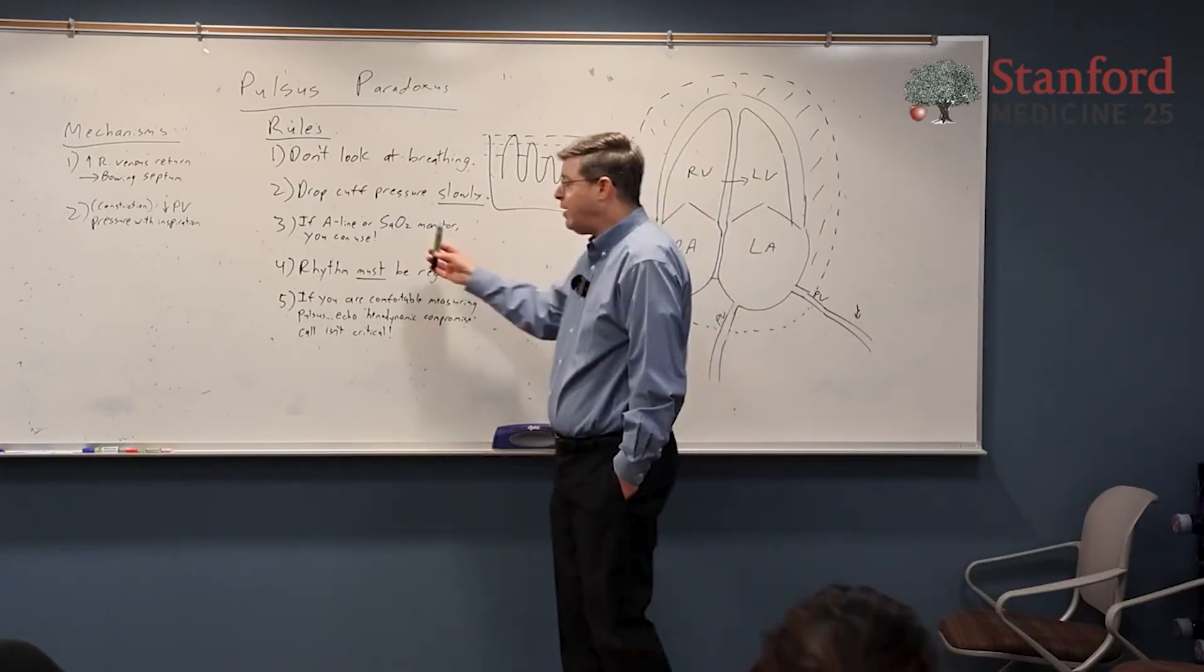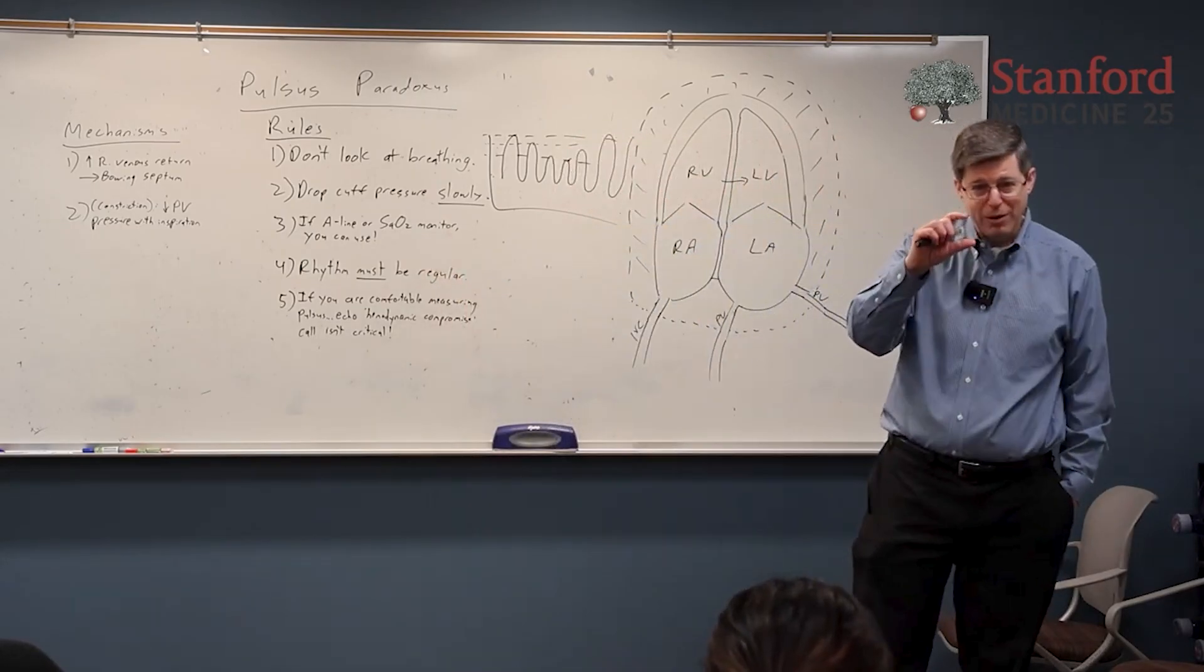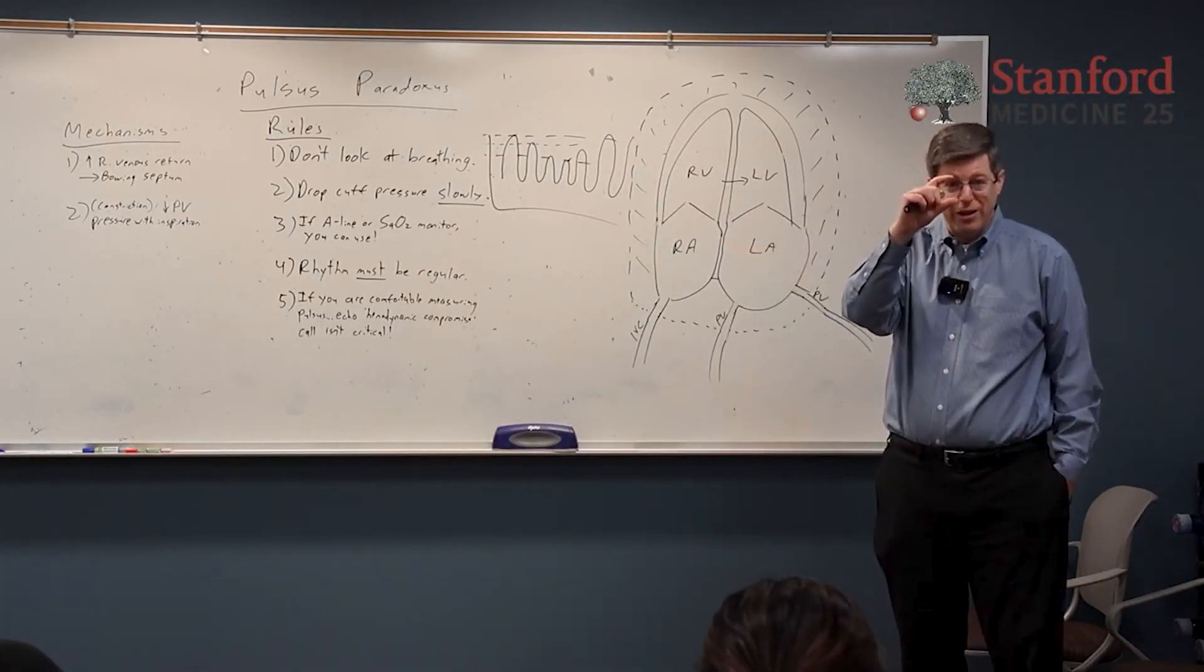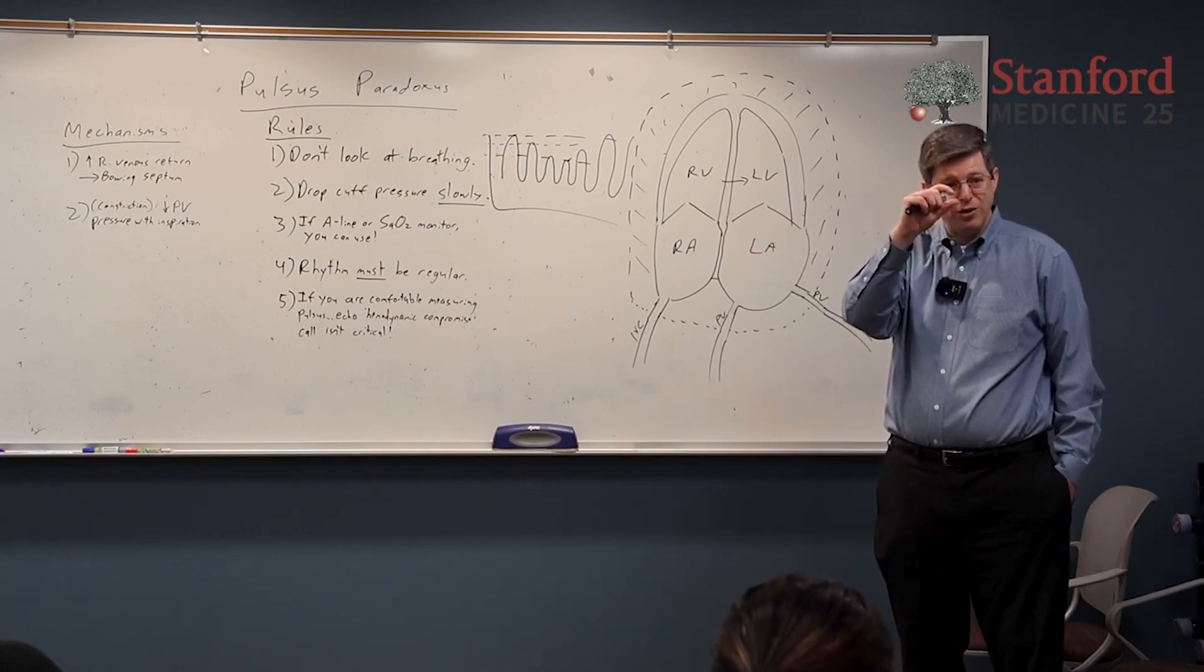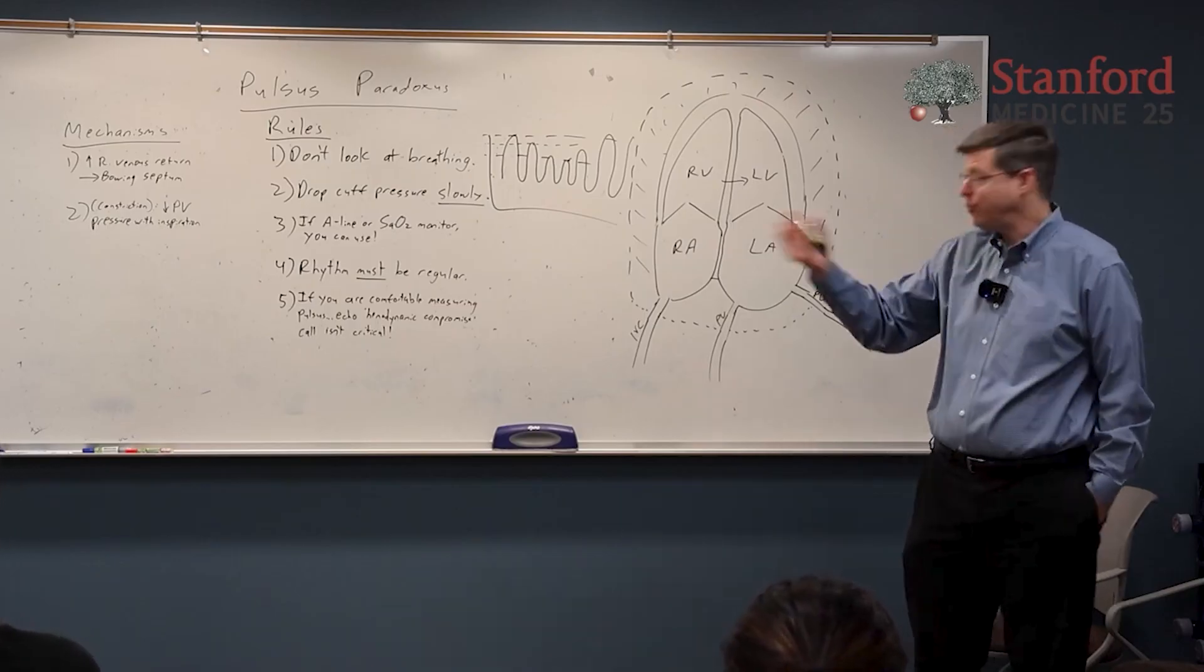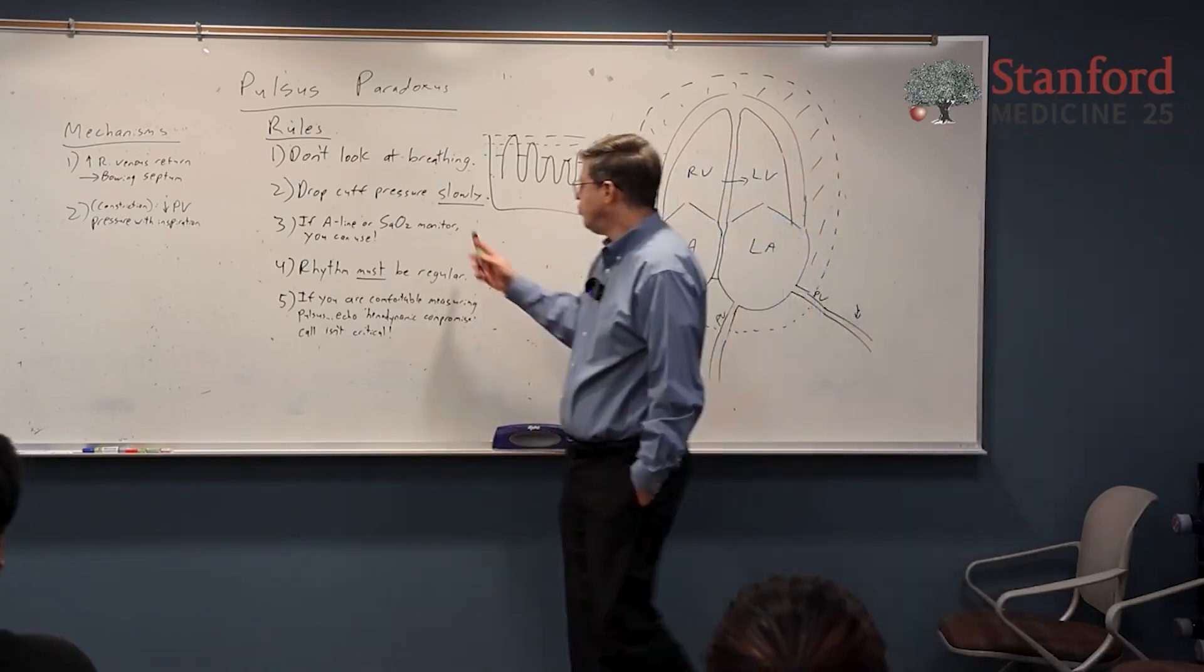Even a sat monitor you can get a sense from, because remember a sat monitor is a poor person's A-line basically. And so you can see somebody with quite prominent pulsus, you'll see that get smaller, bigger, and smaller with the respiratory cycle. Again, you're not going to be able to get a number off of the sat monitor. The A-line you can actually measure the pressure, but you can use the sat monitor.